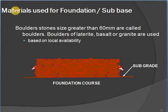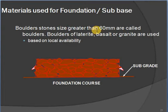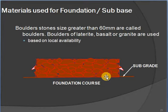Materials used for foundation (sub-base): boulder stones with size greater than 60 mm are called boulders. Aggregates are 40 to 50 mm. Boulders of laterite or granite are used based on local availability. This forms the foundation course above the subgrade.